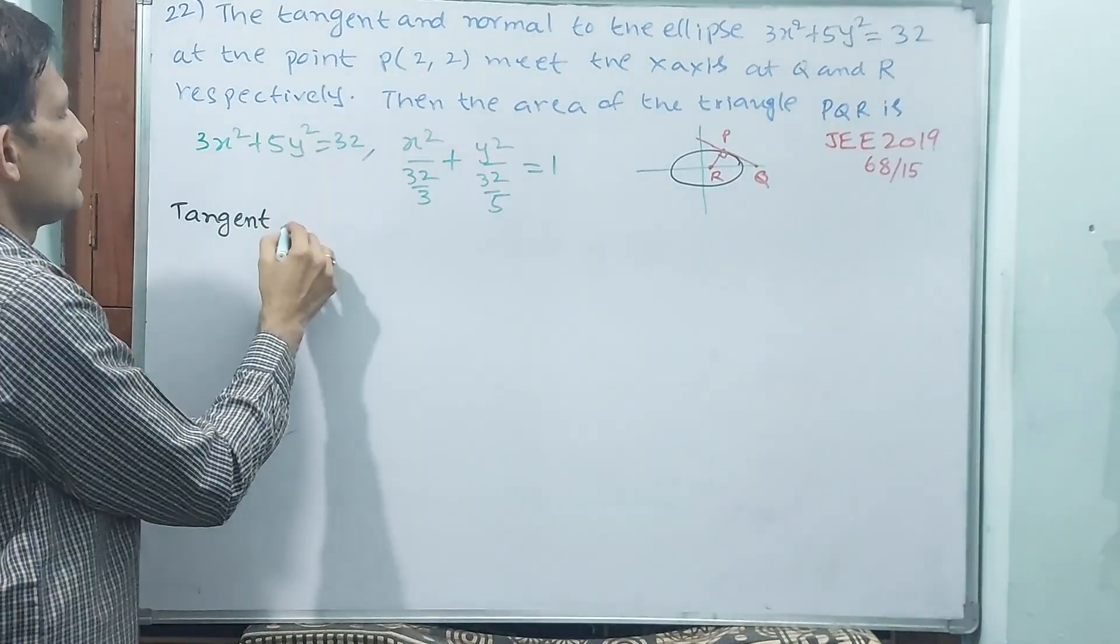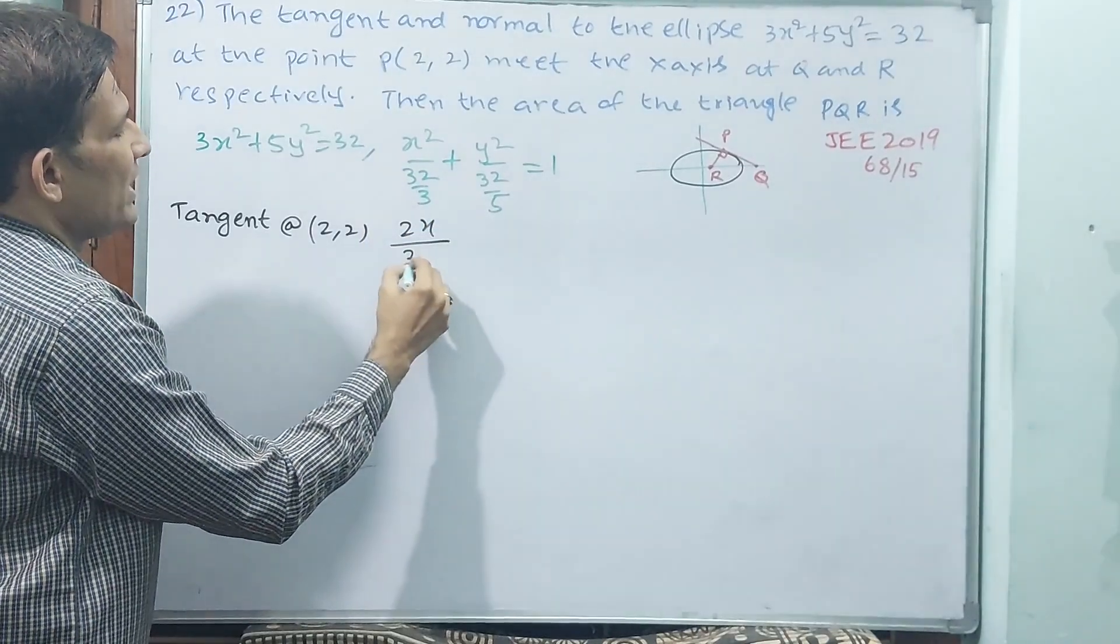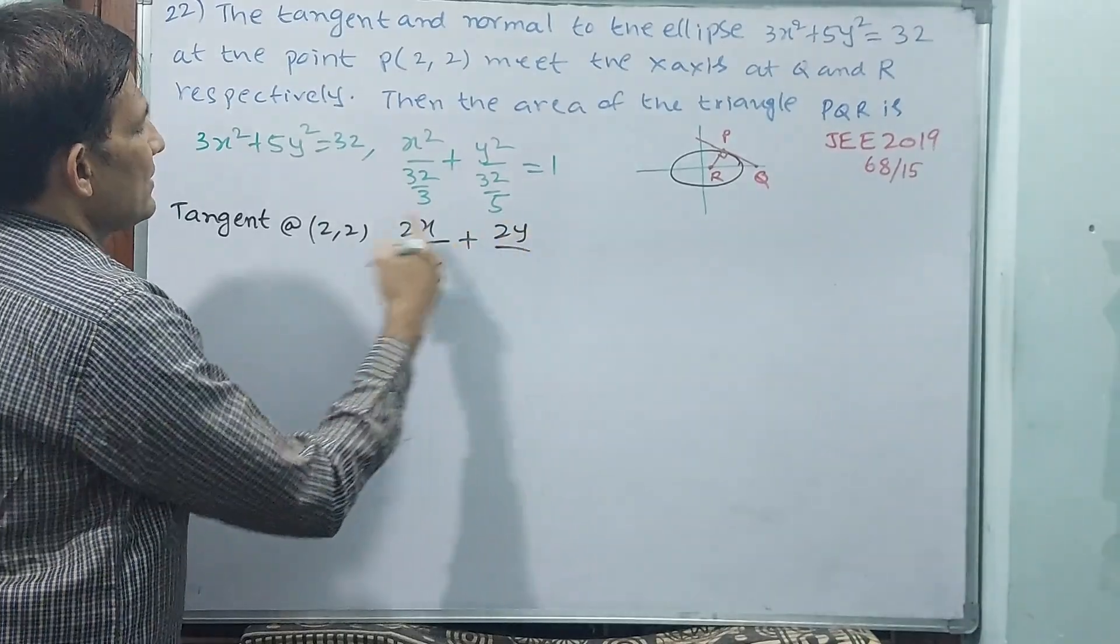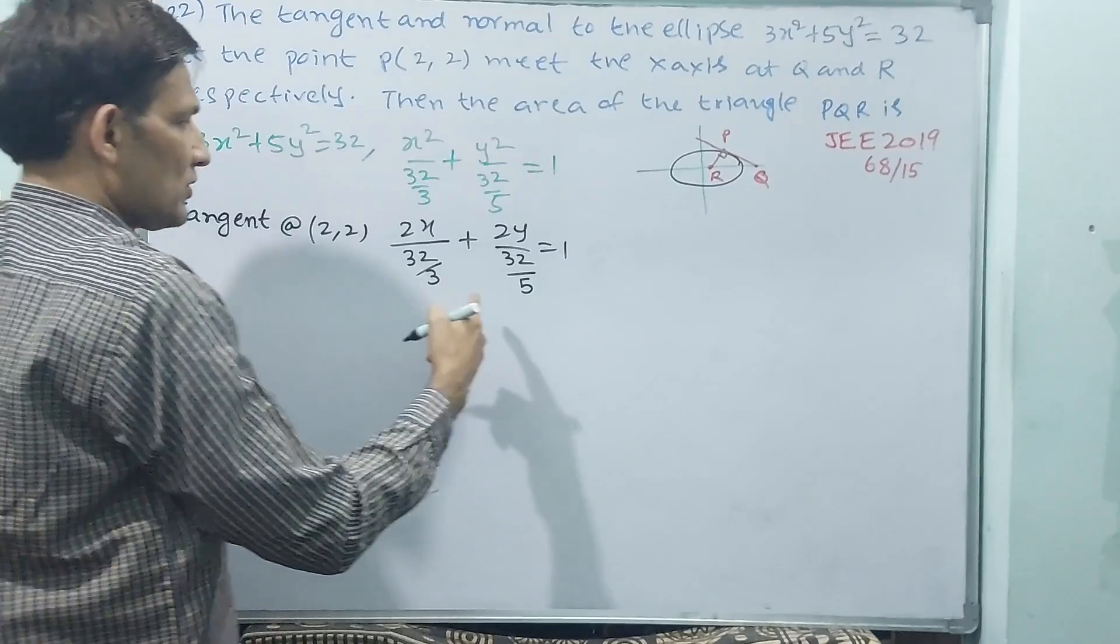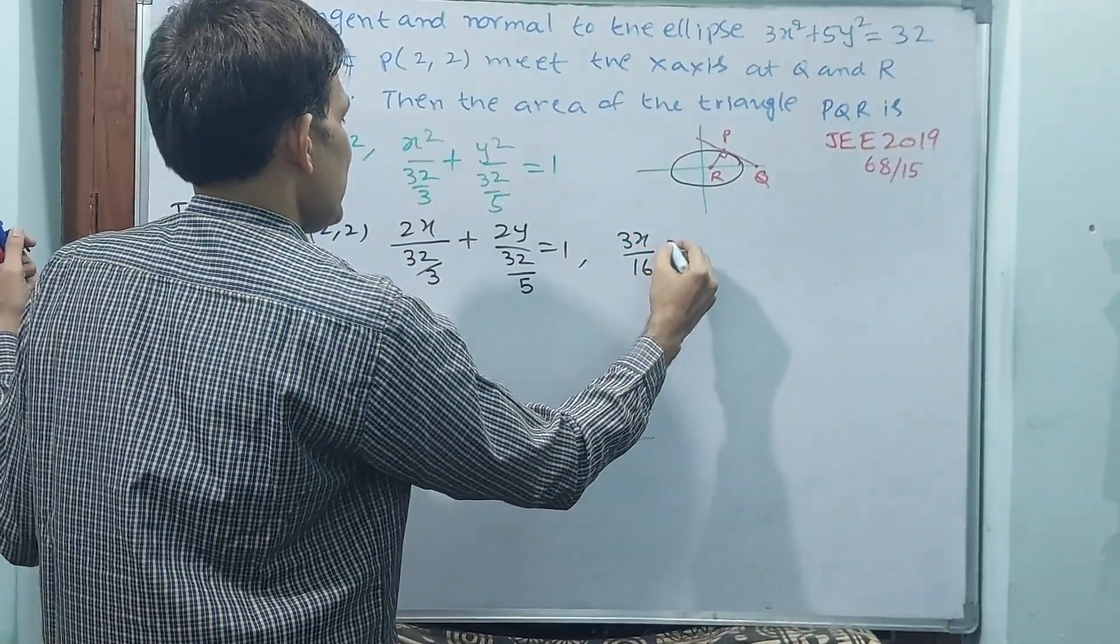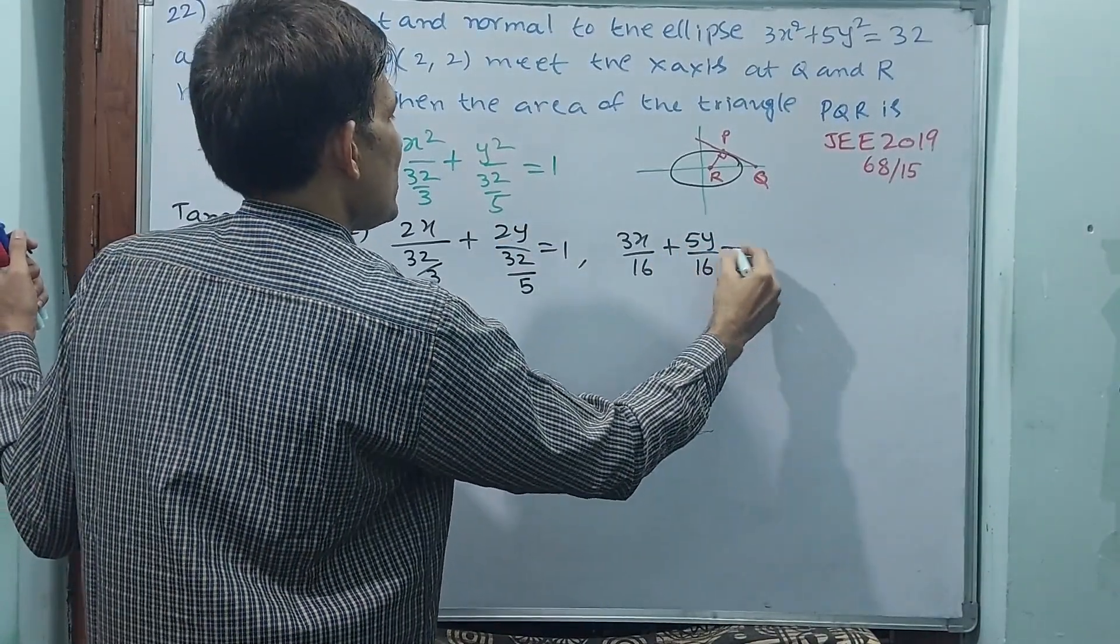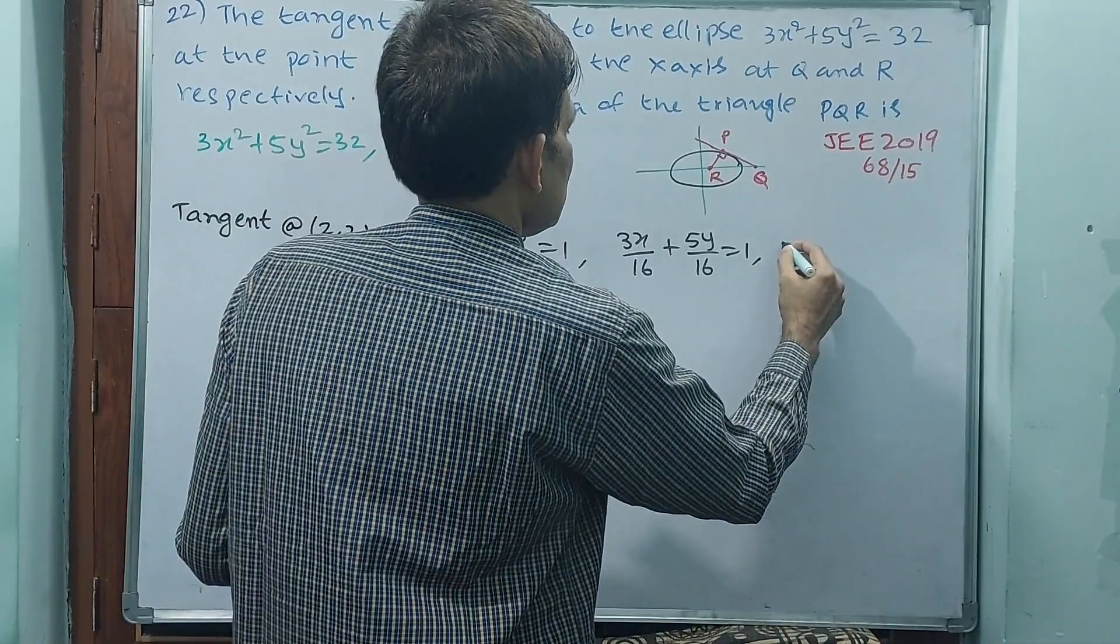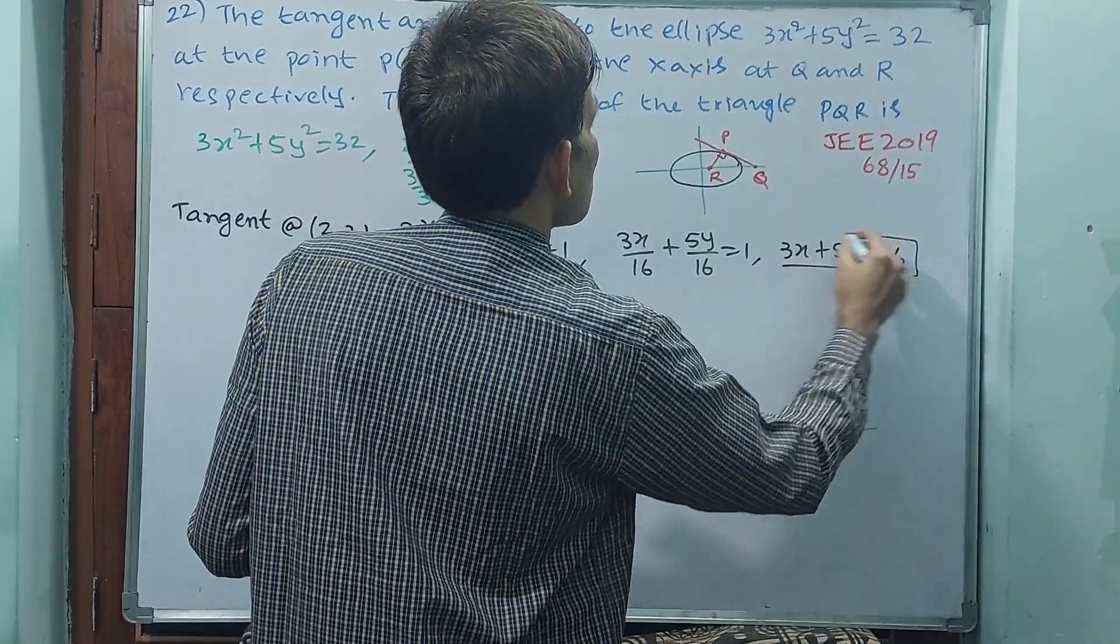Now tangent at (2,2), that means 2x by 32/3 plus 2y by 32/5 is equal to 1. See, 2, 16 times both, that means I will write that one, 3x by 16 plus 5y by 16 is equal to 1, or 16 is LCM, if 16 is LCM automatically 3x plus 5y is equal to 16. This is the equation of tangent.